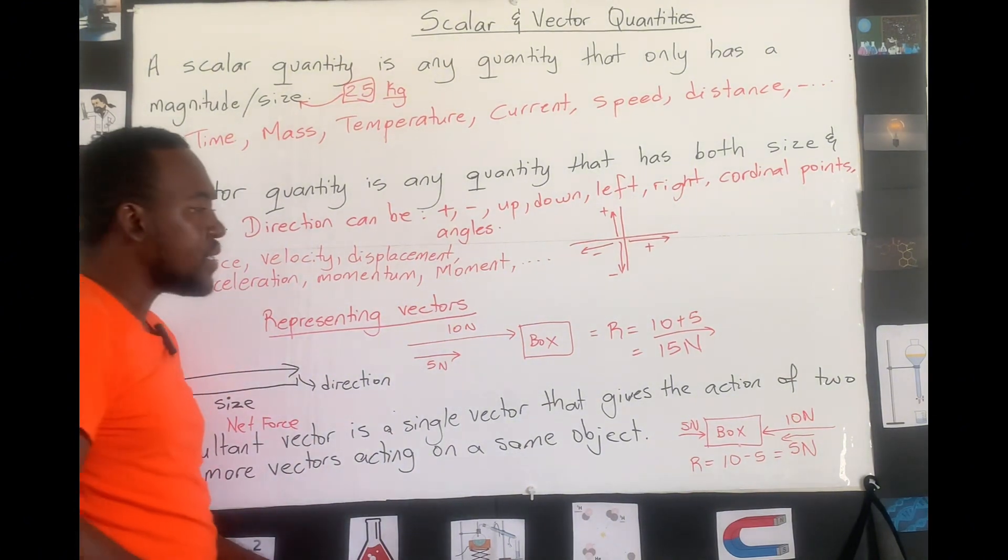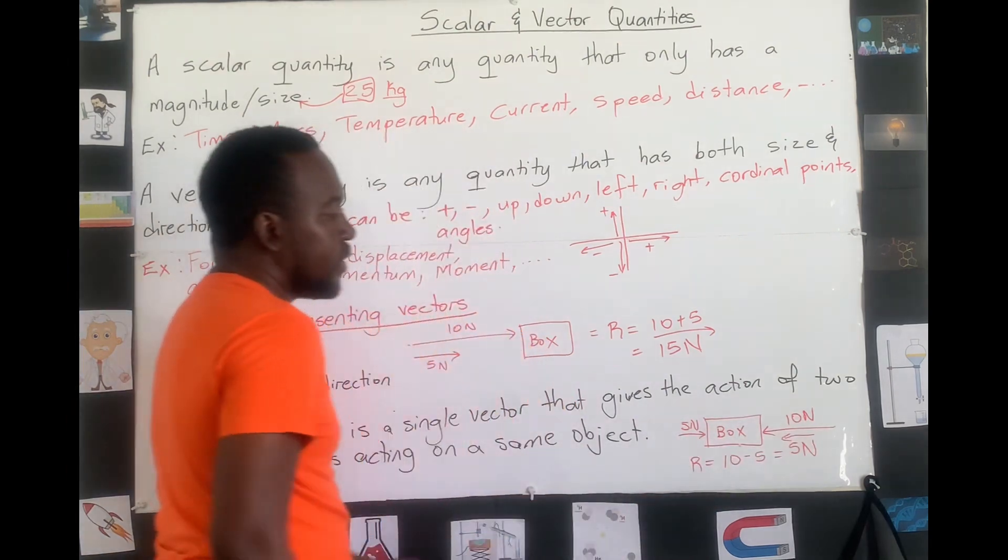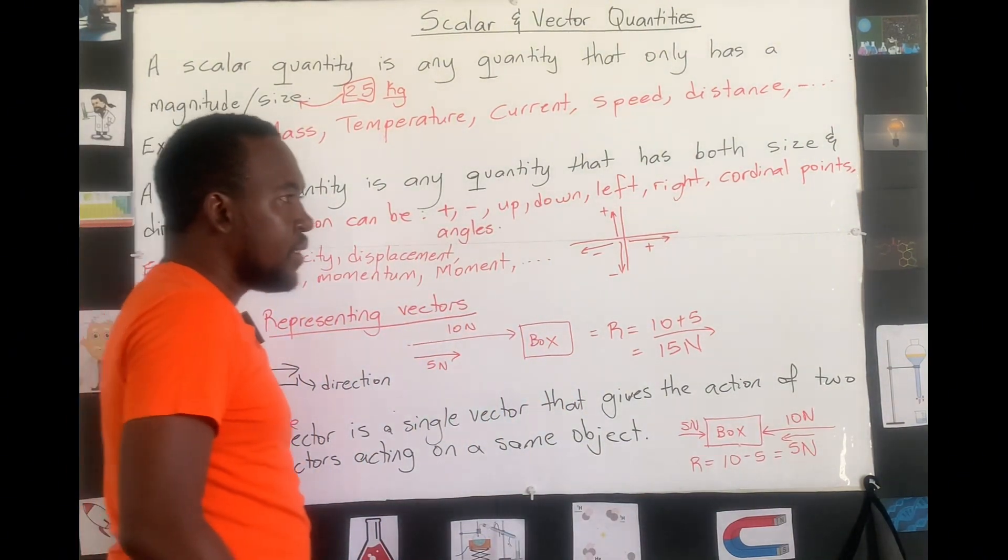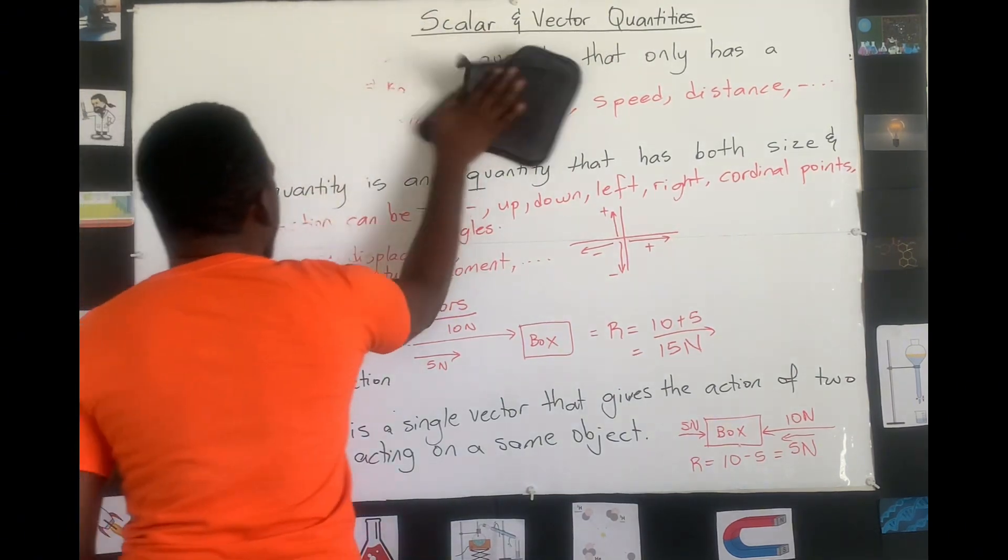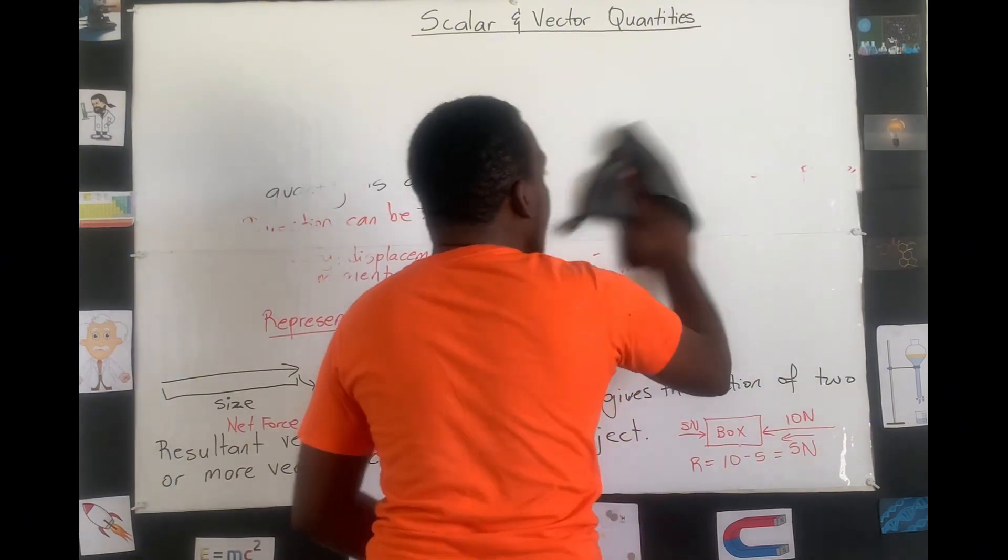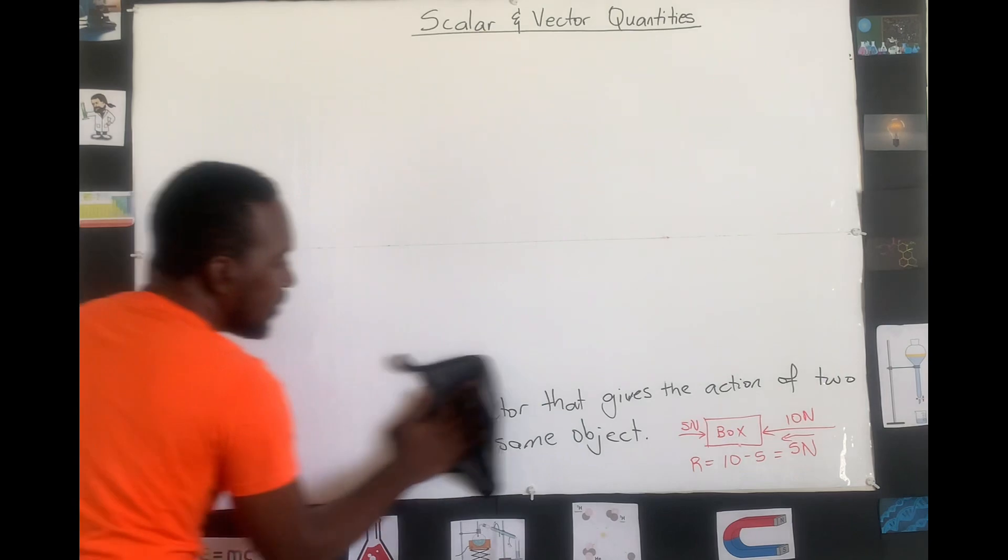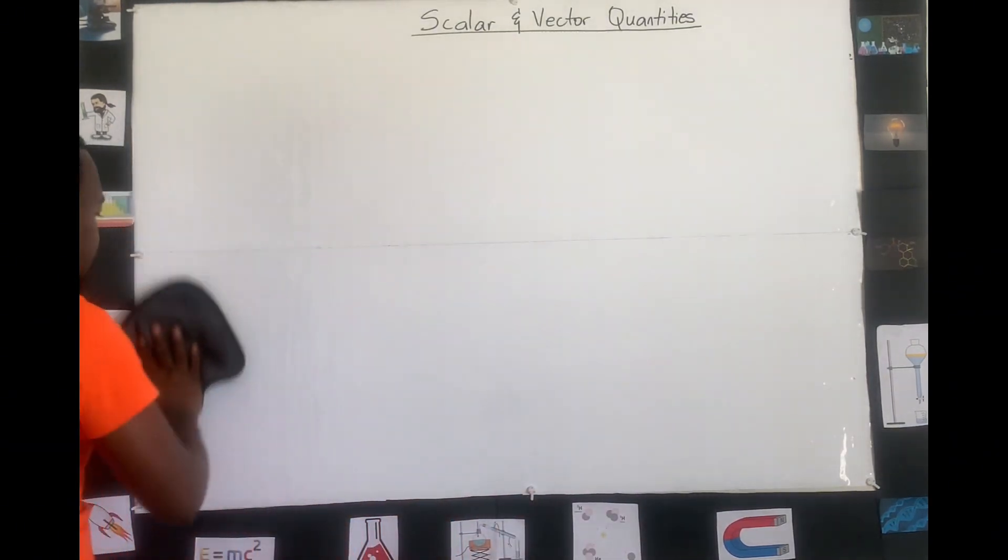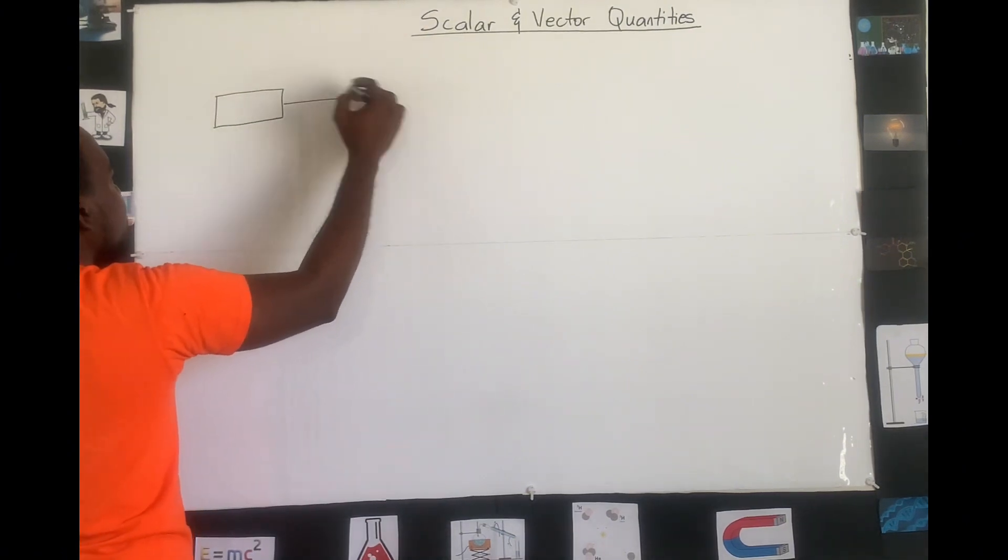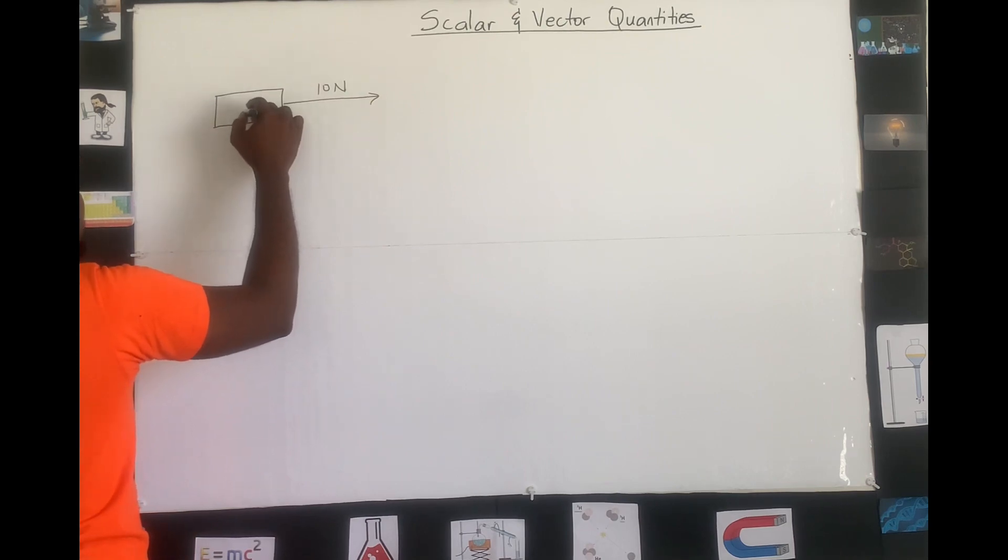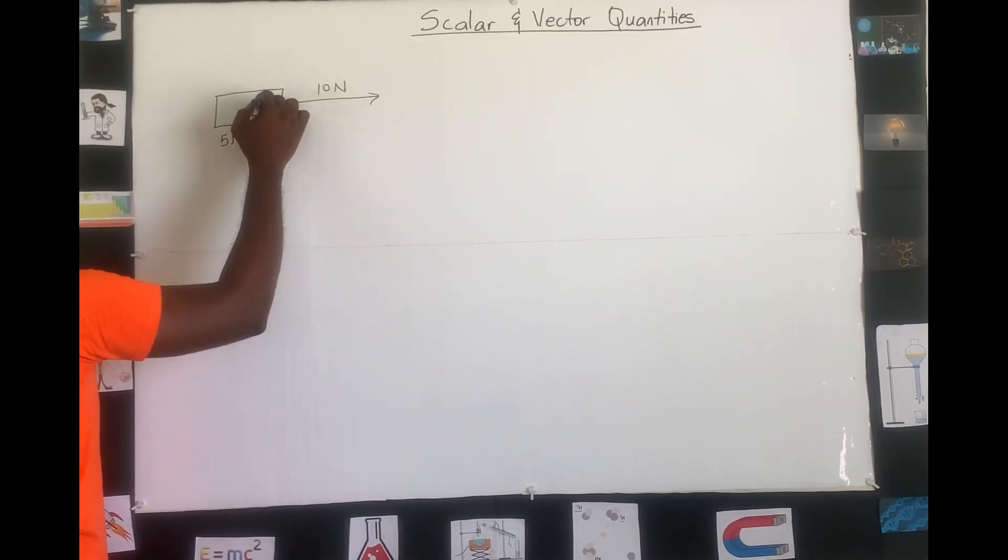In reality, forces or vectors will not always act parallel to each other, meaning going in the same direction or going opposite direction. Sometimes vectors will act at different angles. The angles that we will focus on at the CSEC level would be at 90 degrees to each other. Let's say we take these two same vectors, the 10 and the 5, and we want to know what's the direction that their final acting will go if they're going in 90 degrees to each other. We take the same box, and we take that 10 is pushing it this way, but the 5 is trying to pull it down. Notice if we extend these here, it creates a 90 degree to each other.